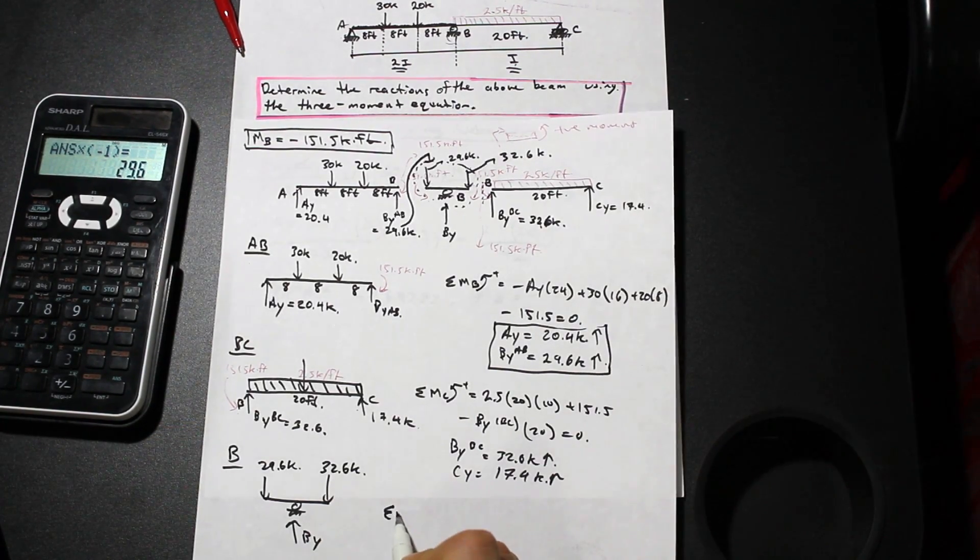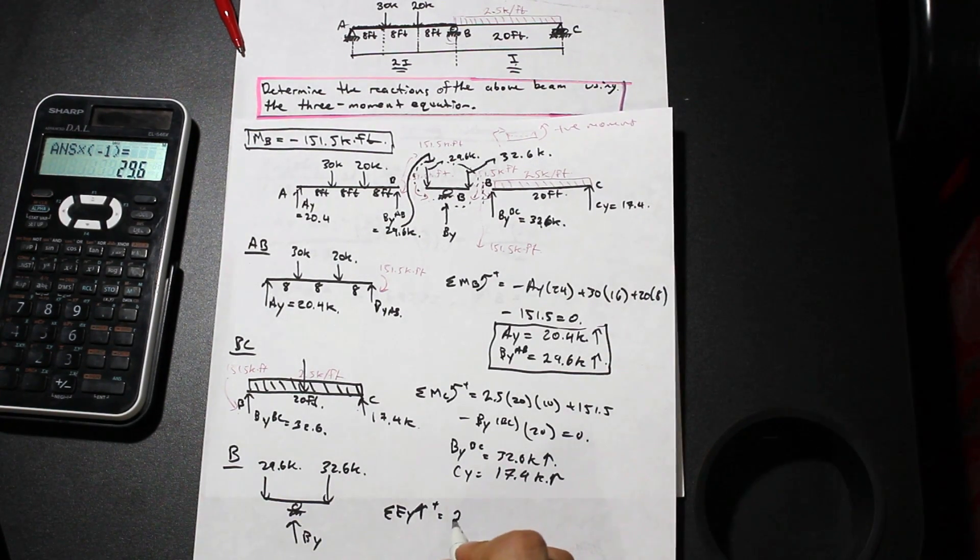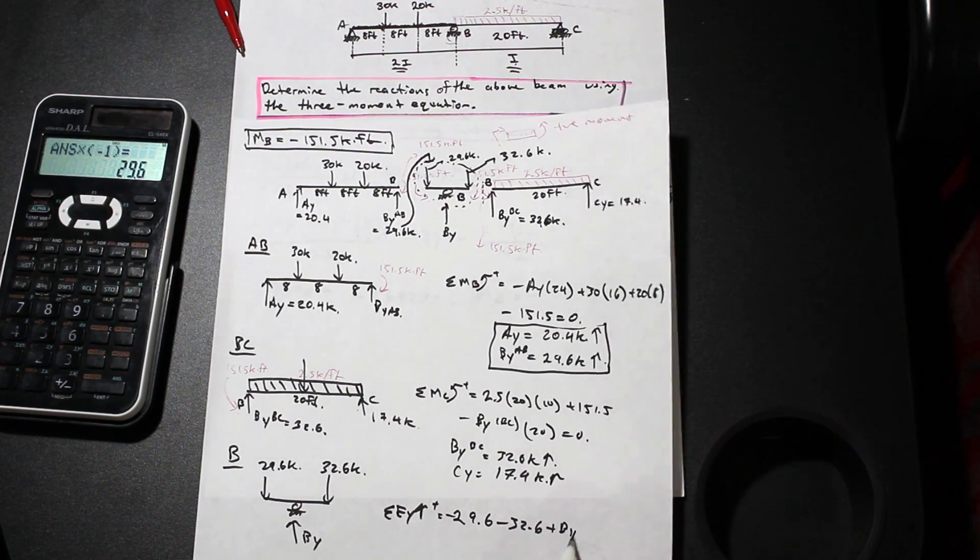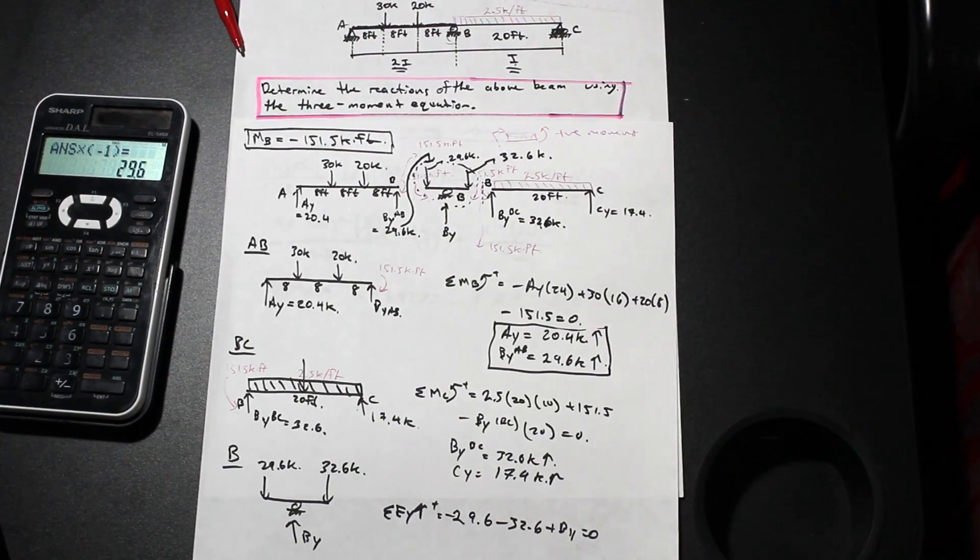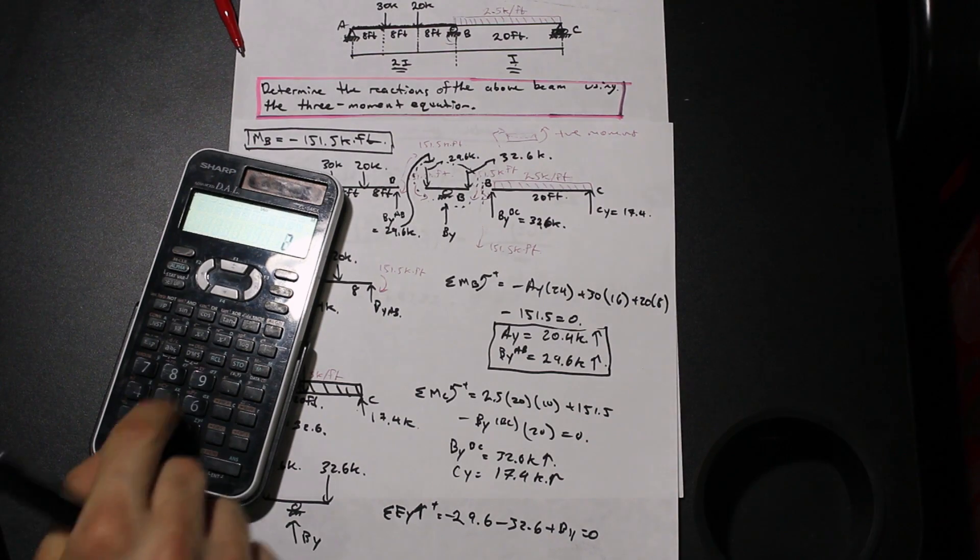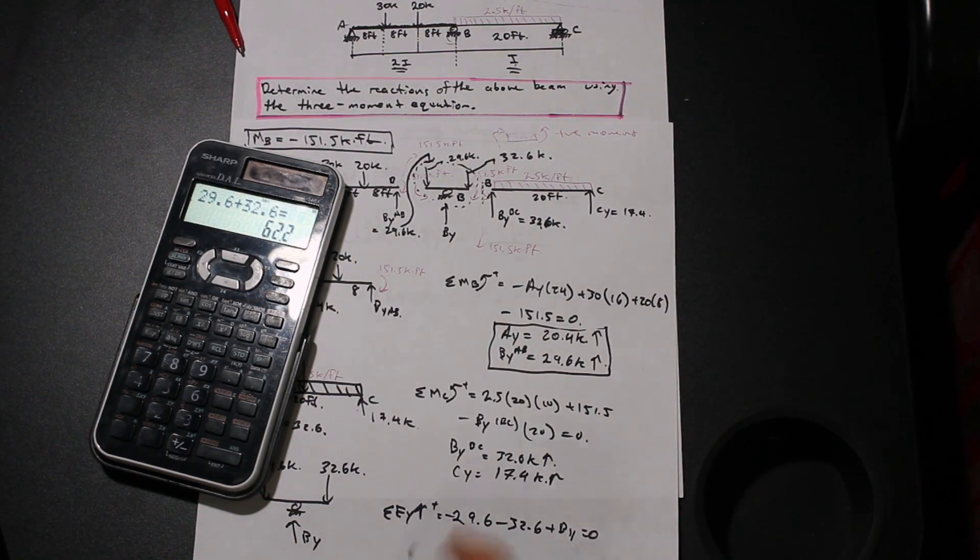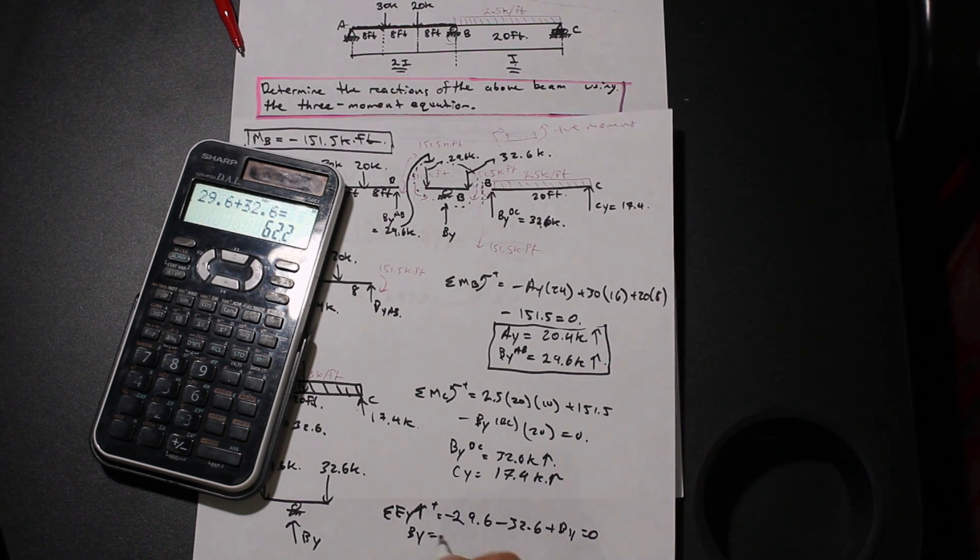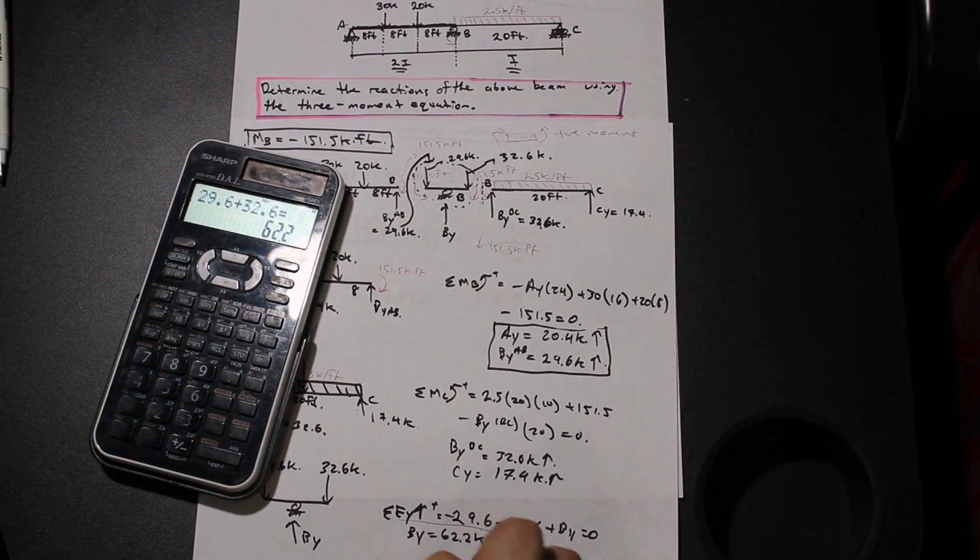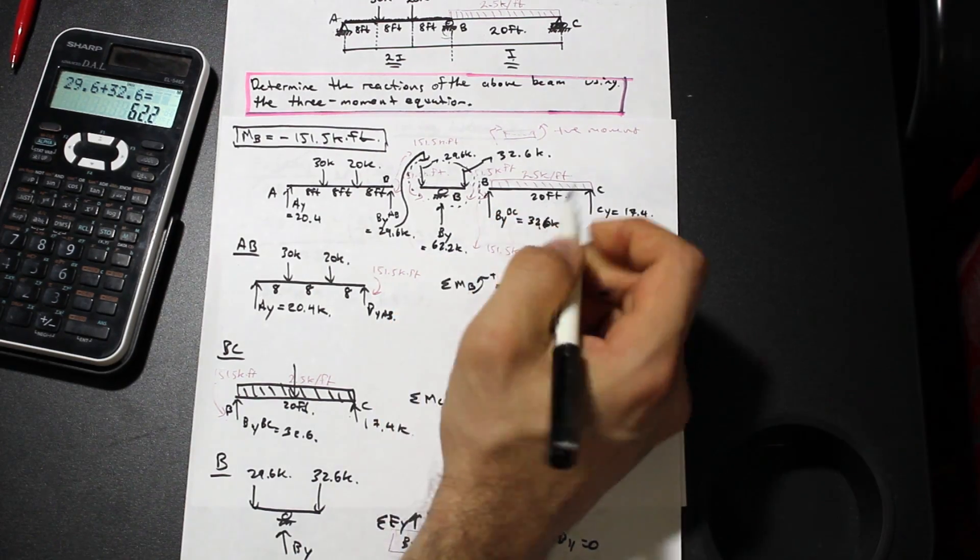We simply take the forces in Y with up as positive and now we can say we have 29.6 minus 32.6 plus BY equals zero. What does BY end up being? Well BY is simply equal to, if we go ahead and put that in our calculator we're going to get BY being equal to 62.2, and that is the reaction, the final reaction solved. So we have BY is equal to 62.2 kip.